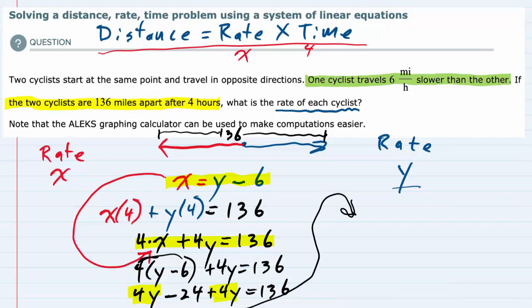We can bring those together and combine and say that that is 8y. I've still got the minus 24 equals 136. Solving for y, I would add the 24 over to get the y term by itself. I now have 8y equals 136 plus 24, which is 160.